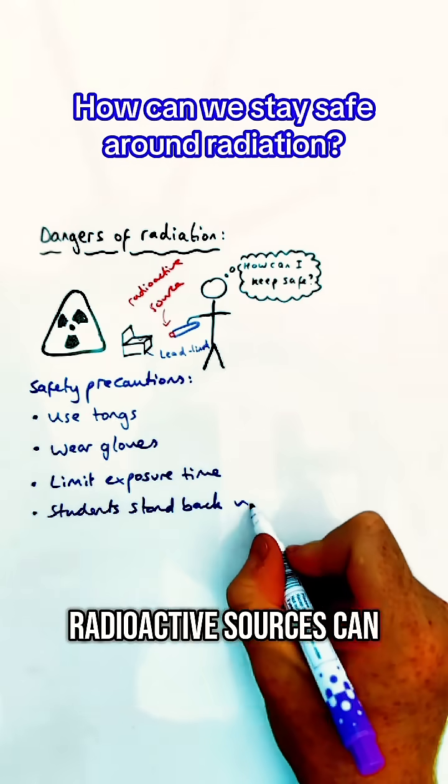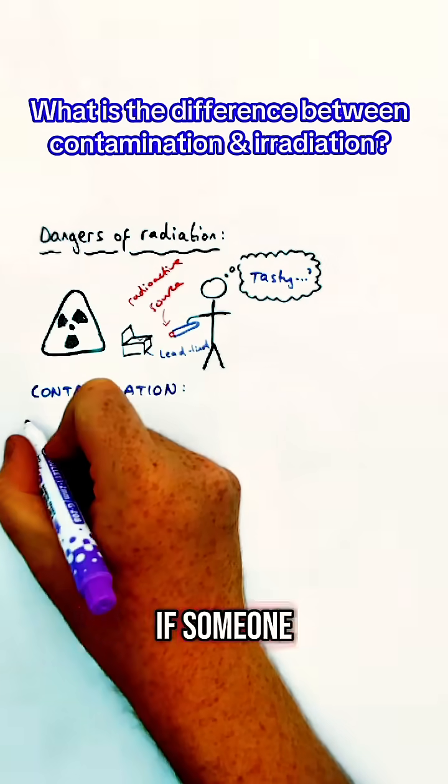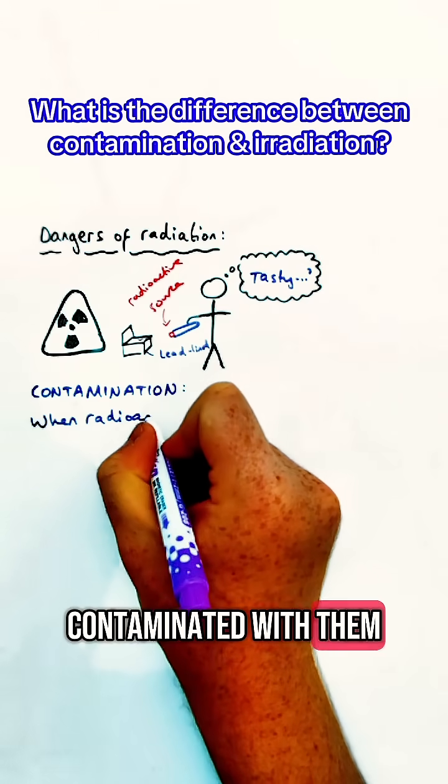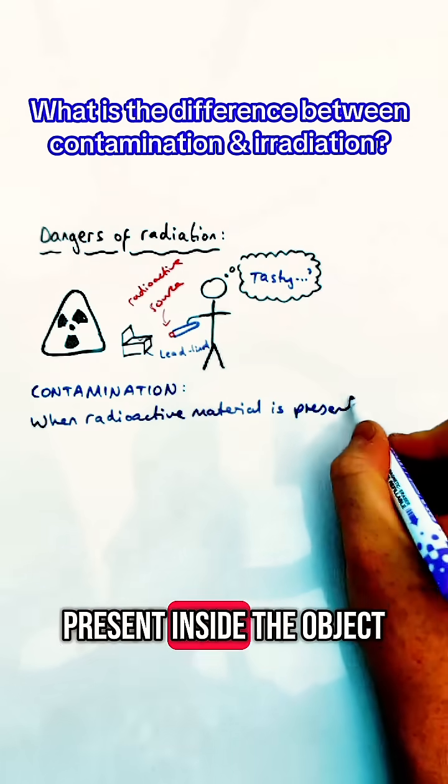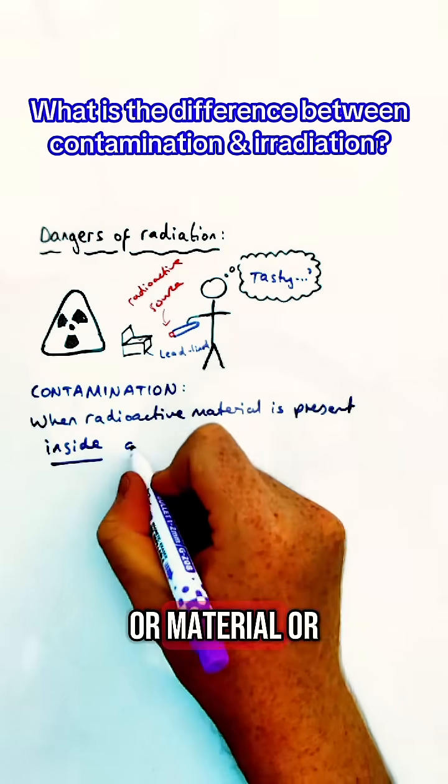Radioactive sources can be especially dangerous if someone or something becomes contaminated with them. Contamination means that radioactive material is present inside the object or material or person.